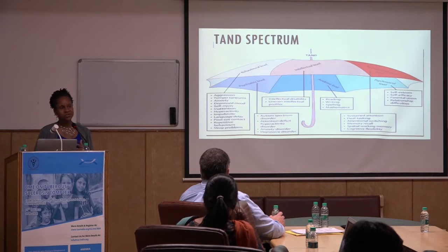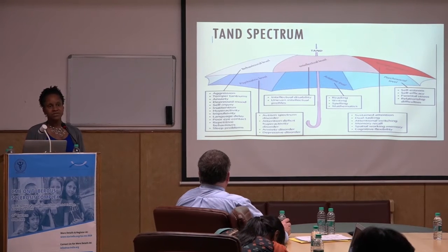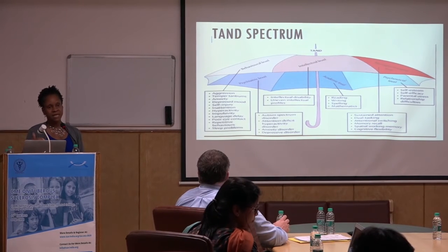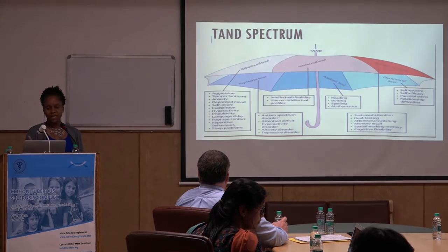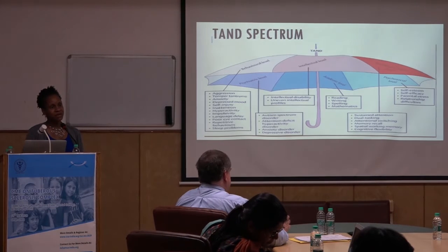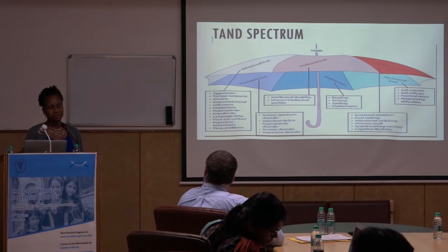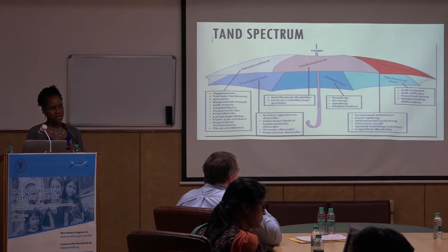This schematic shows the TAN spectrum. If you look at the umbrella, each section — each different color — represents a level: the behavioral level, the psychiatric level, the intellectual level, the academic level, the psychosocial level, and the neuropsychological level. Underneath are all the different symptoms or diagnoses that go with those levels. It's a way of organizing our thoughts about TAN so that we understand the breadth and scope of what can happen.